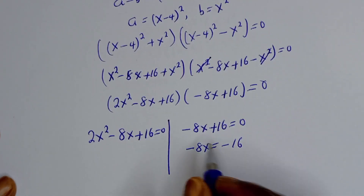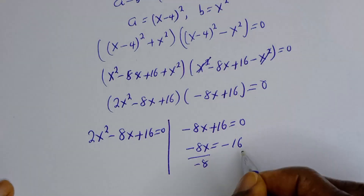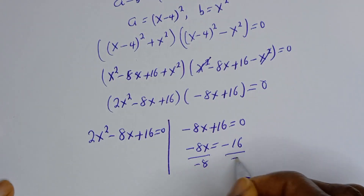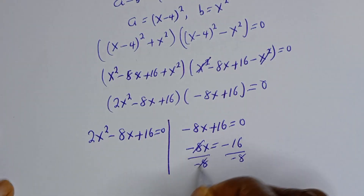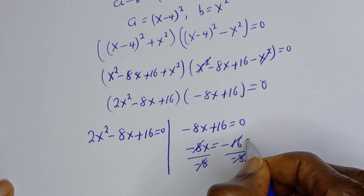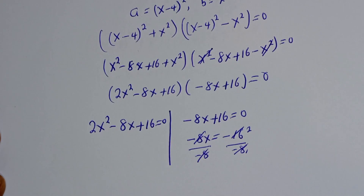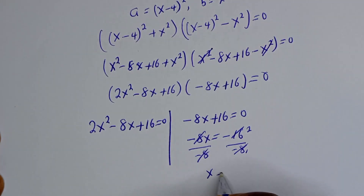From the second case we have negative 8S is equal to negative 16. Let's divide both sides by negative 8. This gives S is equal to 2.